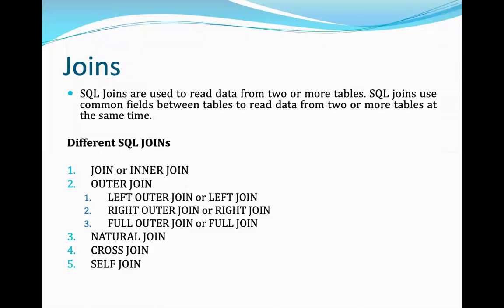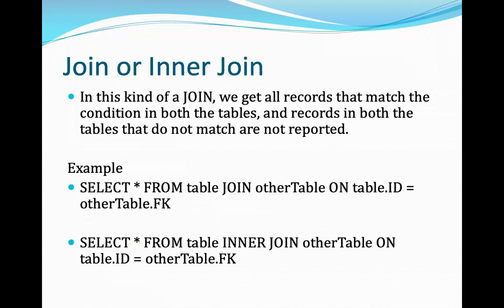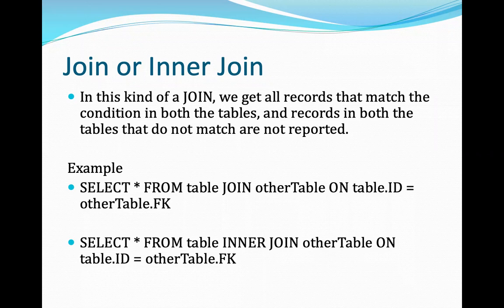The first join is called a simple join or inner join operation. In this kind of join, we get all records that match the condition in both tables. Records in both tables that do not match are not reported. So with inner join, it finds rows satisfying the condition from both tables, and rows which do not satisfy the condition will not appear as output.